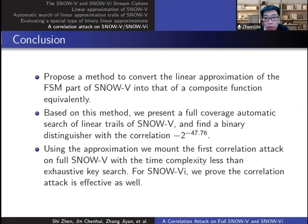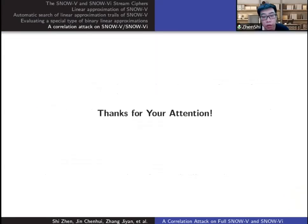We convert the linear approximation of the LFSR and FSM part of SNOW-V into that of our composite function equivalently. Based on this method, we present a full coverage automatic search of SNOW-V and find a valid binary distinguisher. Using this approximation, we mount the first correlation attack on full SNOW-V with the time complexity less than exhaustive key search, and we prove the correlation attack is effective for SNOW-Vi as well. That's all, thanks for your attention.